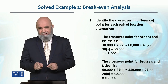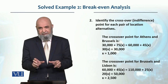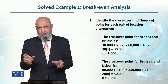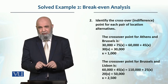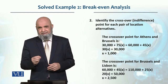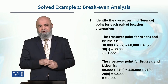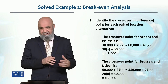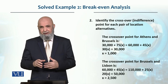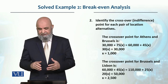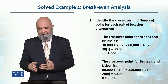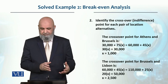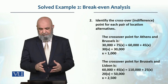This total cost should be equal to the total cost of Brussels at the crossover point. We have to determine the point by finding the value of x — the number of units. So Athens: 30,000 fixed cost plus 75 variable cost multiplied by x, which is equal to Brussels: 60,000 fixed cost plus 45 into x. We then move x to one side to get the value.